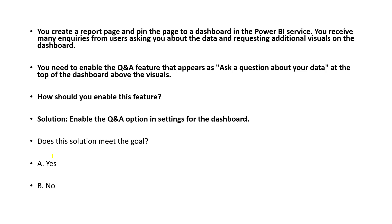Next question: you create a report on product sales and customer churn rates. You receive enquiries from users asking about data and requesting additional visuals on the dashboard. You need to enable the Q&A feature that appears as 'Ask a question about your data.' The answer is: enable the Q&A option in settings. I've even created a ChatGPT-type tool using the Q&A option in Power BI, with over 100 questions configured. The Q&A and Personalize options are very powerful and helpful for clients.